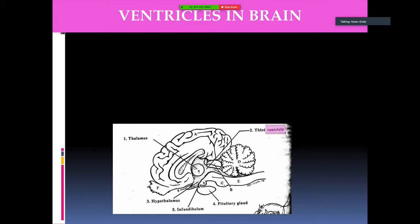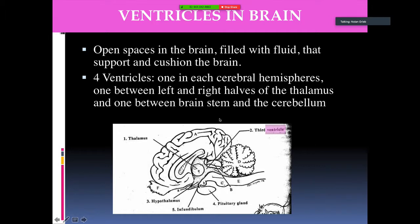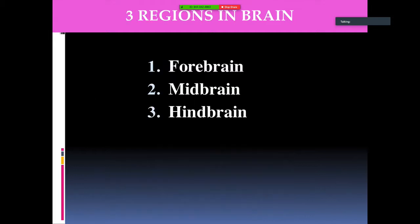Ventricles are open spaces in the brain filled with fluid that support and cushion the brain. There are four ventricles: one in each cerebral hemisphere, one between the left and right halves of the thalamus, and one between the brain stem and cerebellum. The three regions of the brain are the forebrain, midbrain, and hindbrain.